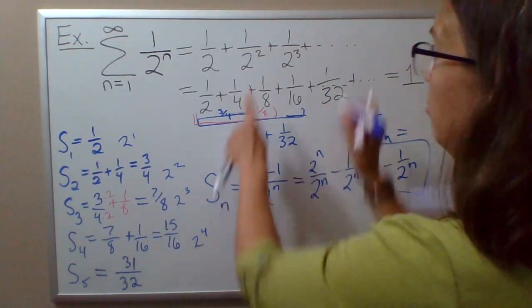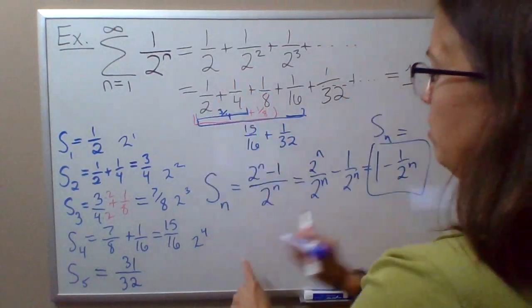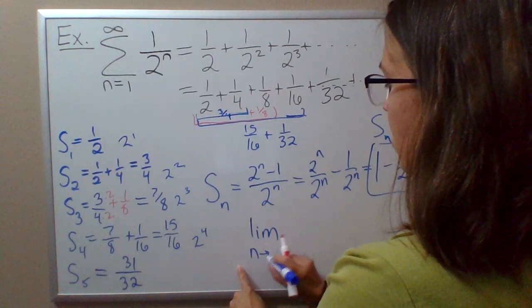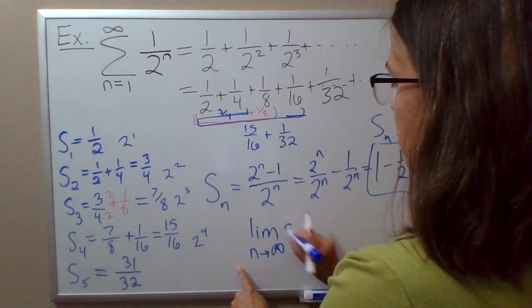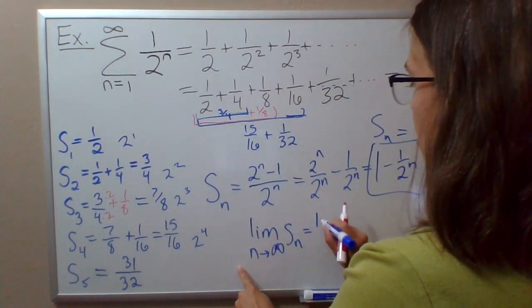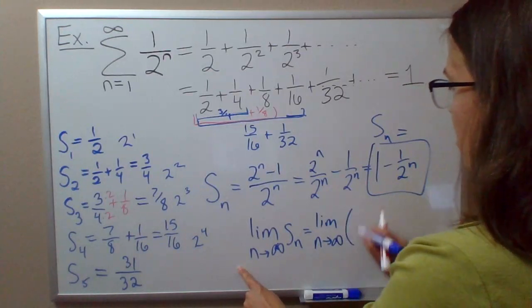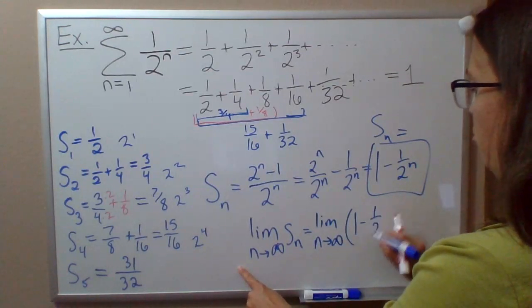And so now, if you want to find the sum of this infinite series, we take the limit of the partial sums as n approaches infinity. So this is the limit as n approaches infinity of 1 minus 1 over 2 to the n.